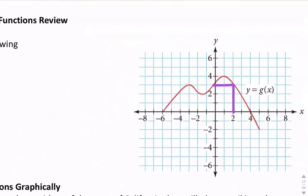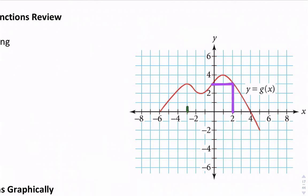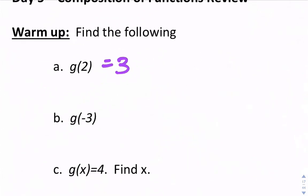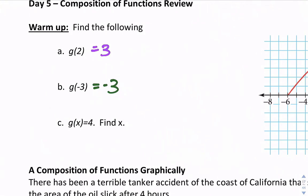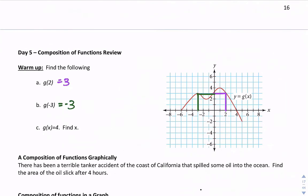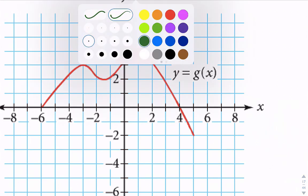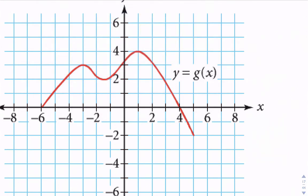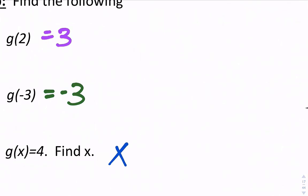Let's find g of negative 3. We'll find when the x value is negative 3, and it also is 3. Part C is saying the output is 4 — find the input that gives the output 4. So let's find where the output is 4. It's along this line right here, and there's one answer. When the output is 4, the input is 1. So we'll say x equals 1.